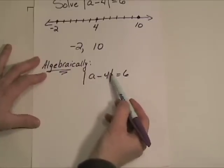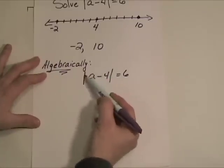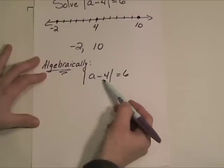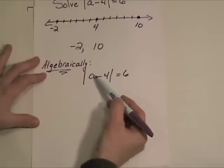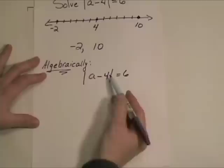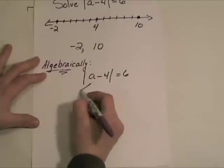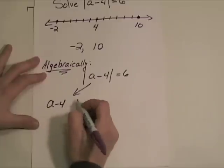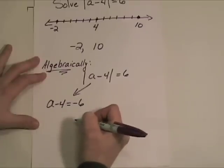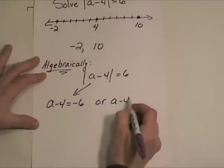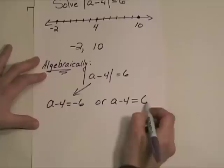Now for this to work, the amount inside of here can be either a six or a negative six. Either way, when you take the absolute value, you're going to get six. So let's just write that out. We have two possible things that can happen. A minus four might be equal to negative six, or A minus four might be equal to positive six.